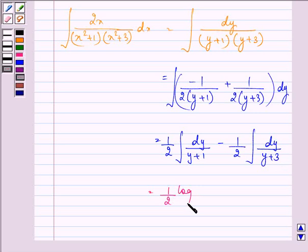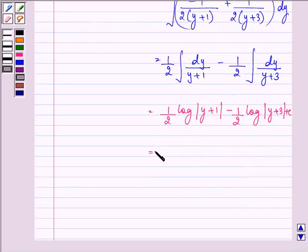Now we can write it as 1 upon 2 log mod y plus 1 minus 1 upon 2 log mod y plus 3 plus c, which can also be written as 1 upon 2 log mod of y plus 1 upon y plus 3 plus c.